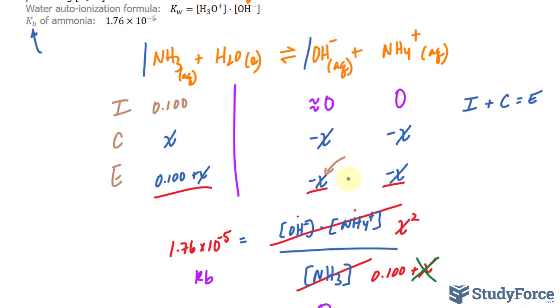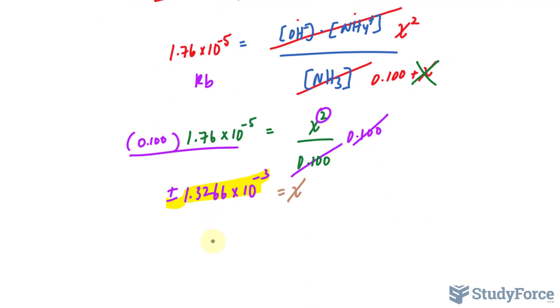Now, I can find the concentration of OH by substituting this into negative X. So pretend I'm taking the negative version of this number, substituting it into there, and we need this to three significant figures. So we end up with 1.33 times 10 raised to the power of negative 3 molar. Amazing.